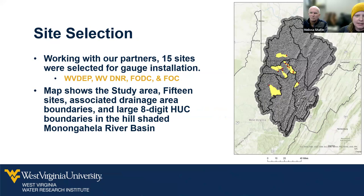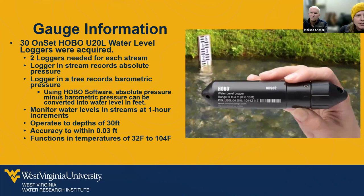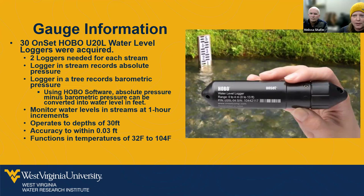We acquired 30 Onset HOBO U-20L water level loggers — two per stream. One goes into the water to record absolute pressure, and another stays out to record barometric pressure. By subtracting the barometric pressure from the absolute pressure, we can convert the stream data into water level in feet. We set the gauges to collect data at one-hour increments to save battery life and storage capacity while still providing good data. They can operate up to 30 feet with an accuracy of 0.03 feet and function at temperatures of 32 to 104 degrees Fahrenheit.